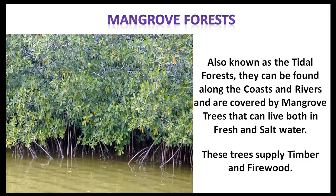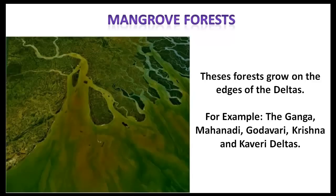Also known as the tidal forest, mangrove forest can be found along the coasts and rivers and are covered by mangrove trees that can live both in fresh and salt water. These trees supply timber and firewood. Mangrove forests grow on the edges of the deltas — for example, the Ganga, Mahanadi, Godavari, Krishna and Kaveri deltas.